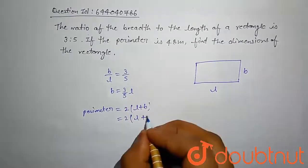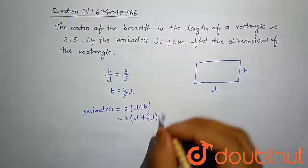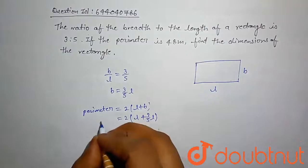Length plus width. Here you can see width is given, l is l, width is 3 by 5 l.